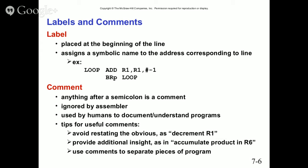Labels are placed at the beginning of a line and assign a symbolic name to the corresponding address. For example: LOOP ADD R1, R2, #1. Anything after the semicolon is a comment, ignored by the assembler, and used by humans to document and understand programs. You can also write scripts to pull comments out for documentation — for test cases or test plans, you can use those comments as a baseline to test whether a line executes a particular command.